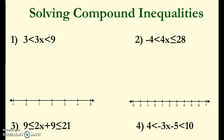For number one we have 3 is less than 3x which is less than 9. Just like I would solve a multi-step equation or regular inequalities, I'm going to pretend that there's an equal sign there. I want to get x all by itself, and right now I have this 3 times x. So I'm going to divide by 3 — something unique with compound inequalities: whatever operation I perform, I have to make sure I do it to all three parts.